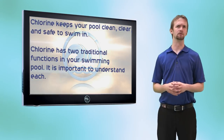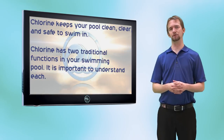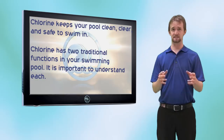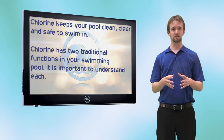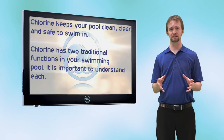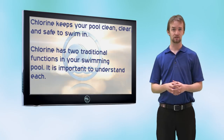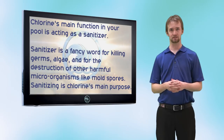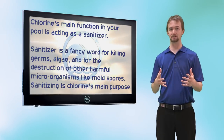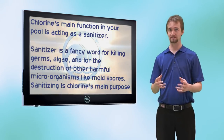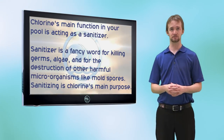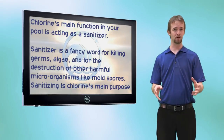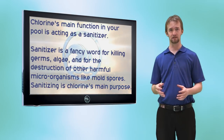Chlorine is the chemical that keeps your pool clear, free of contaminants, and safe to swim in. To understand how chlorine works, we need to understand a couple of things about its function. First of all, chlorine functions as a sanitizer, meaning it kills microorganisms like germs, bacteria, and algae spores. That's chlorine's main purpose: to sanitize your water and keep it safe and clean.